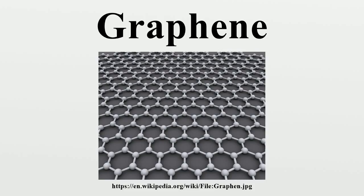Isolated or freestanding graphene is defined as a single atomic plane of graphite which, and this is essential, is sufficiently isolated from its environment to be considered freestanding. This definition is narrower than the IUPAC definition and refers to cleaved, transferred, and suspended graphene. Other forms of graphene, such as graphene grown on various metals, can become freestanding if, for example, suspended or transferred to silicon dioxide or silicon carbide.